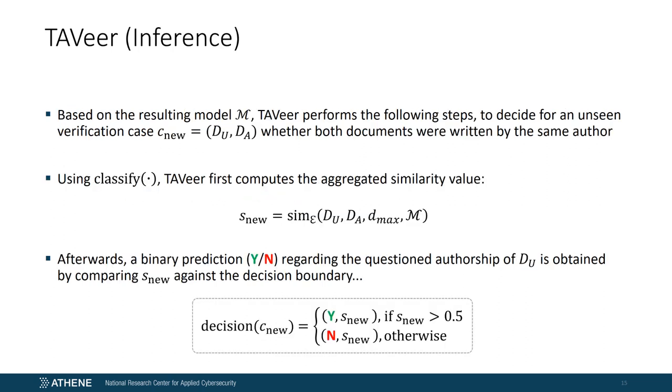Now that we have left the training phase, we can use the constructed model M to classify a new, that means an unseen, verification case. This is done as follows. Using the introduced classification function, TAVeer first computes the aggregated similarity value S_new between the unknown and known document. Afterwards, a binary prediction regarding the questioned authorship of the unknown document is obtained by comparing S_new against the decision boundary 0.5. If S_new exceeds this value, TAVeer assumes that both documents were written by the same author, otherwise by different authors. Well then, this is essentially the way how TAVeer works.